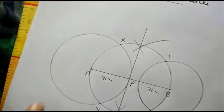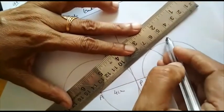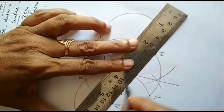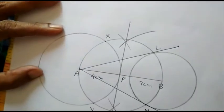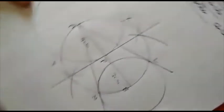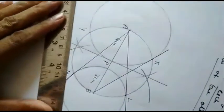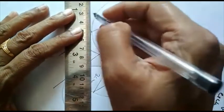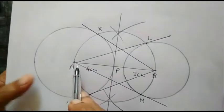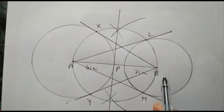If we join now AL and AM, these are tangents to circle with center B from point A. Similarly, BX and BY are the tangents to circle whose center is A from point B. So thank you. This was all about today's lecture. Try the remaining questions of this exercise.